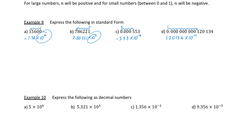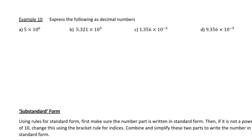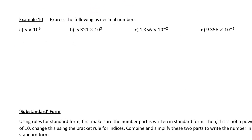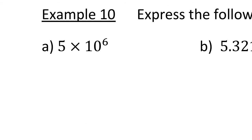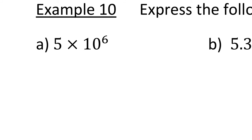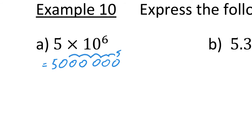We're now going to look at how we can do the reverse — starting with numbers in standard form and putting them back into decimal form. The first one is 5 times 10 to the power of 6. Effectively, what we're doing is moving that 5 six places to the left: 1, 2, 3, 4, 5, 6 — so it just becomes 5 million. You can imagine the 5 started in the units and moved six places.